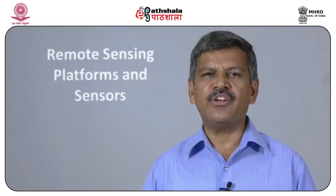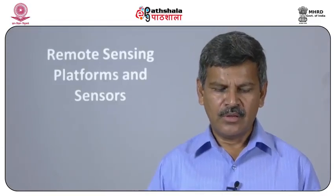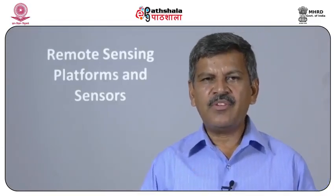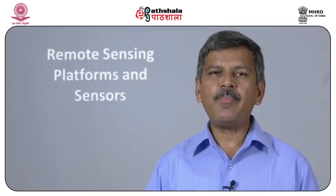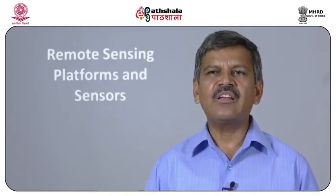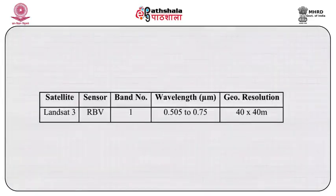Now come to Landsat. This satellite has on-board MSS, thematic mapper, and also enhanced thematic mapper. Landsat was launched with the cooperation of NASA. Landsat 3 RBV specification: band number 1, wavelength 0.505–0.75, geo-resolution 40 × 40 meters.